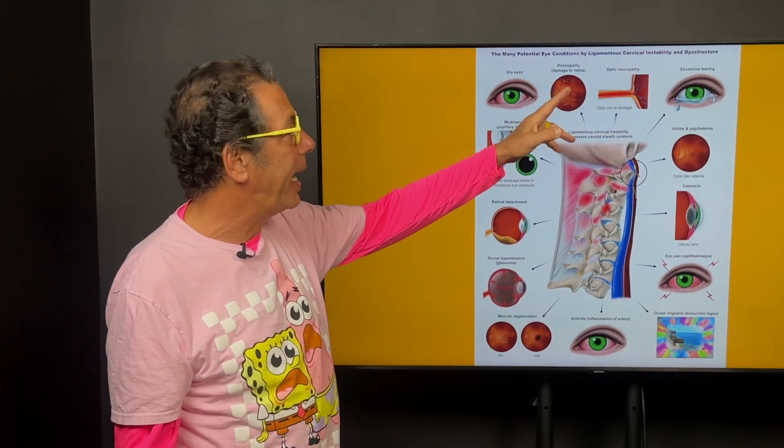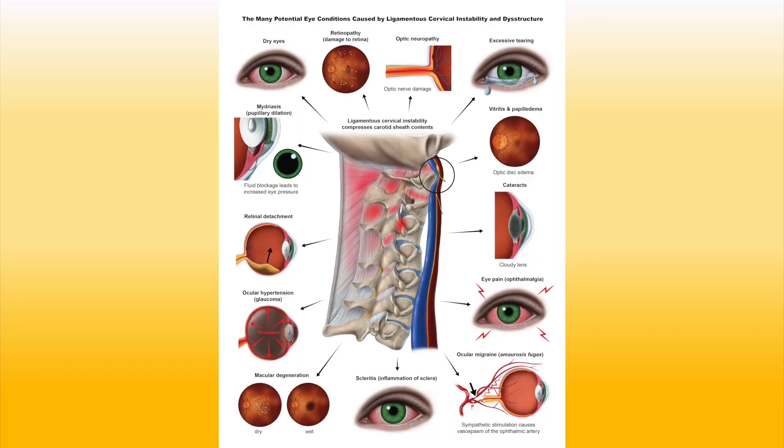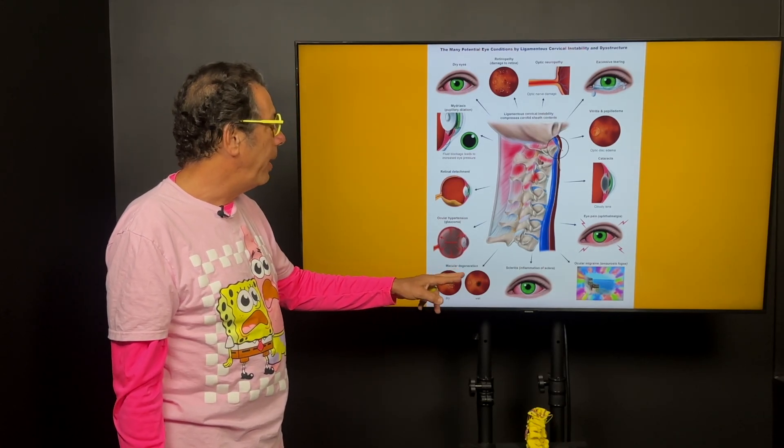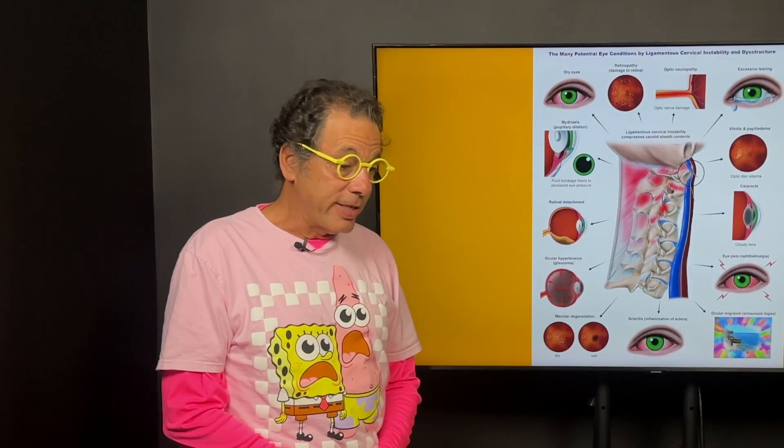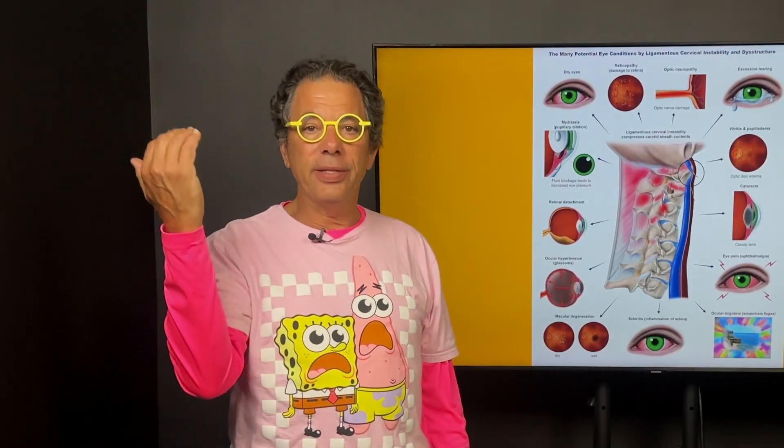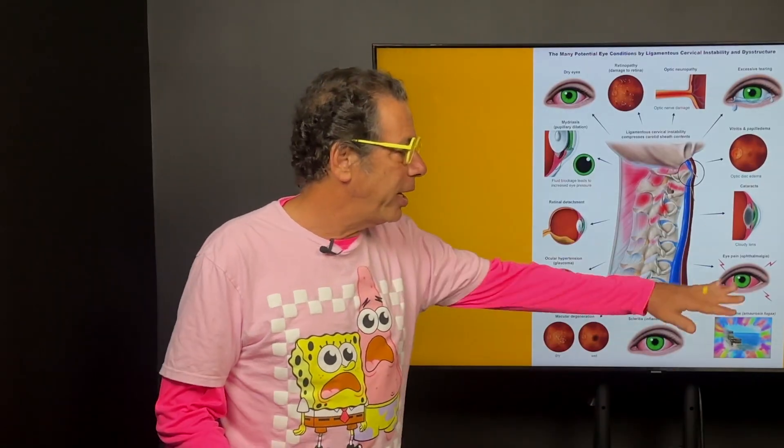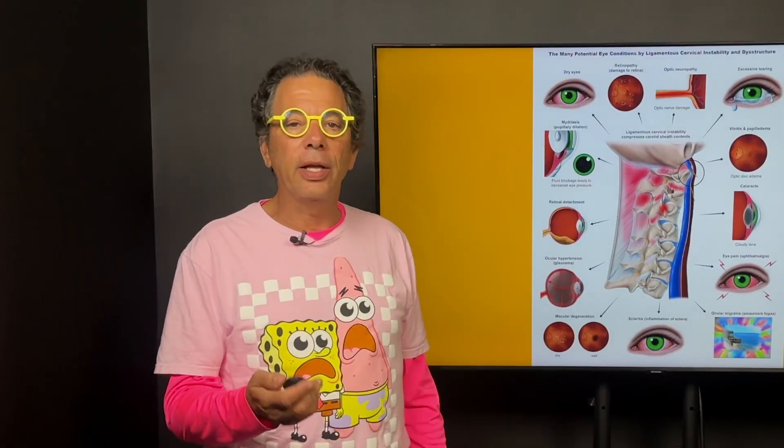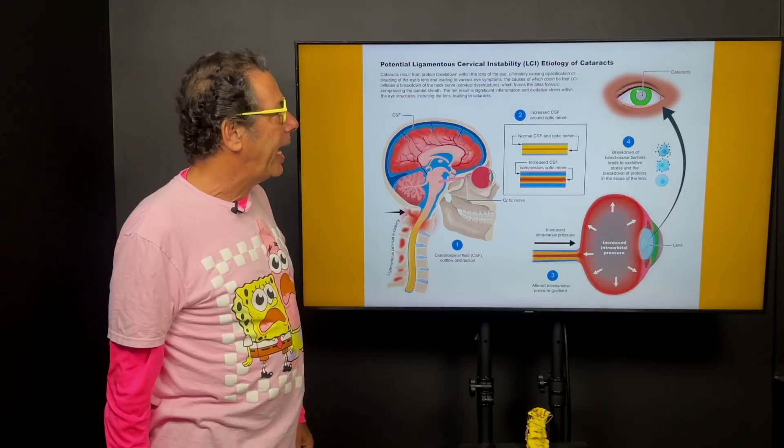What are some of the eye diseases? Dry eyes, retinopathy, optic neuropathy, excessive tearing, papilledema, vitreitis, cataracts, eye pain, ocular migraine, amaurosis fugax, scleritis, retinal vasculitis, macular degeneration, ocular hypertension or glaucoma, retinal detachments, excessive pupillary dilation. So if you're somebody who has light sensitivity, like you couldn't be in front of these bright lights, then you really should get an evaluation for cervical oculopathy or cervical breakdown of the cervical curve causing eye conditions.